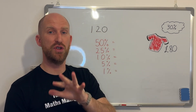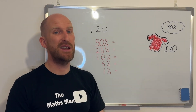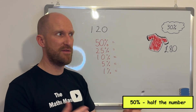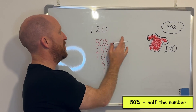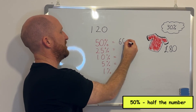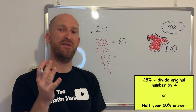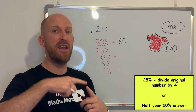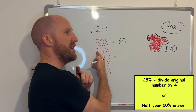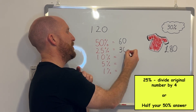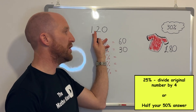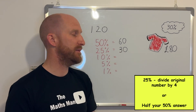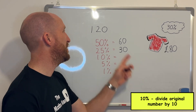Here I have the number 120. To find 50% is the easiest — all you have to do is take the number and divide it by two, or half it. So half of 120 is 60. For 25%, there are two ways: you can find 50% first and then half that answer because 25 is half of 50, so that would be 30. Or you can take 120 and divide it by four, which gives the same answer.